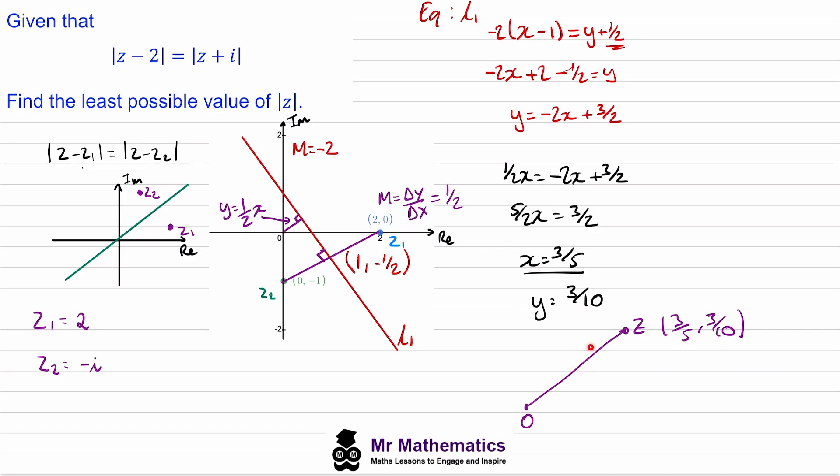So we can use the Pythagorean theorem to work out the length from zero to z. This will be the square root of (3/5)² so 9/25, plus (3/10)² so 9/100.